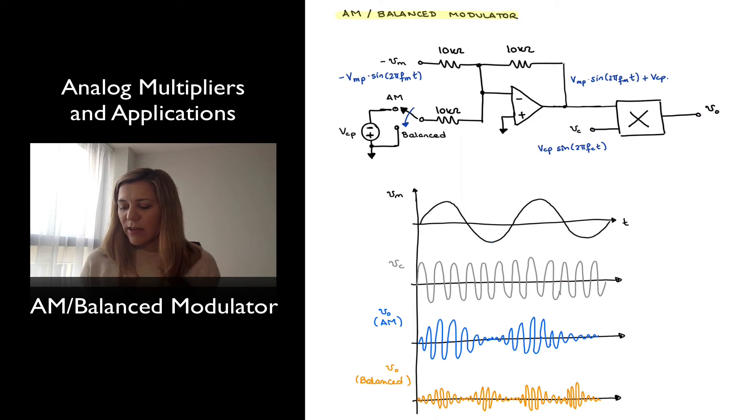Then I have a carrier signal, which is supposed to be, according to the previous example, Vm will be equal to 5 times the sine of 2 pi 1000 t.